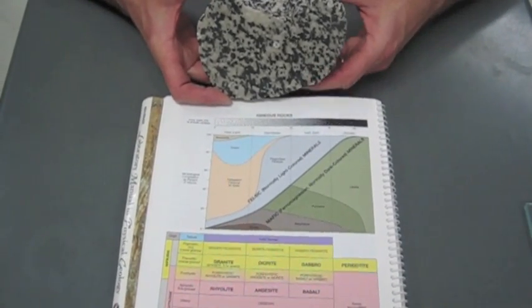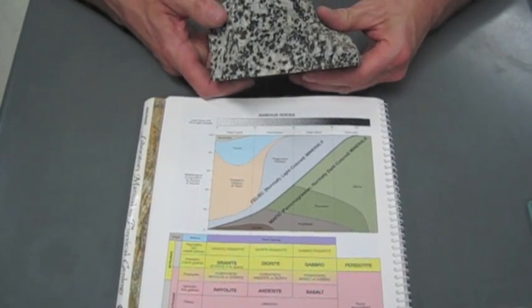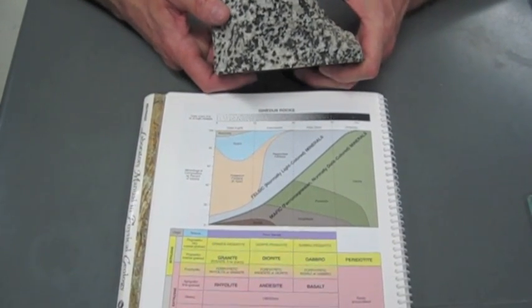This is a coarse-grained igneous rock called diorite. It's a cut and polished slab on that surface, and there it is on just a broken surface.